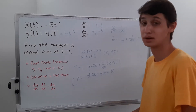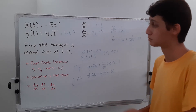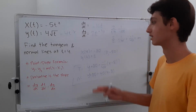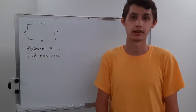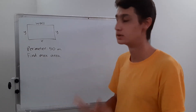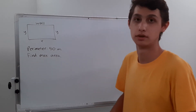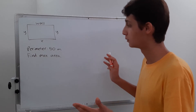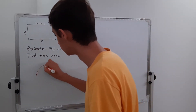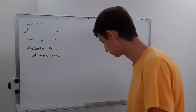Those are our tangent and normal lines. The easiest version of this question would give you a function in terms of y equals something, so you don't have to deal with parametrics. Another important application of derivatives is optimization, where you're trying to find the maximum or minimum of something. In this case, we have a fence around a garden and we're trying to find the maximum area given 50 meters of fencing.